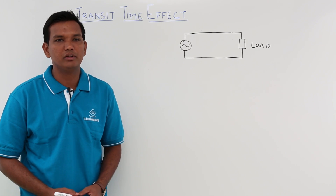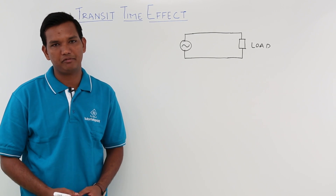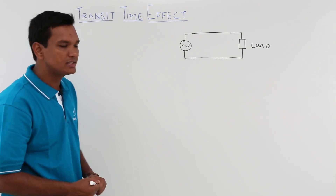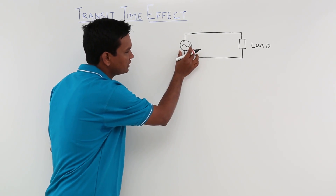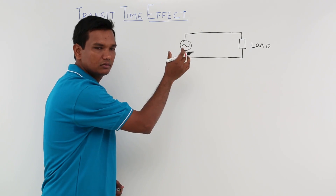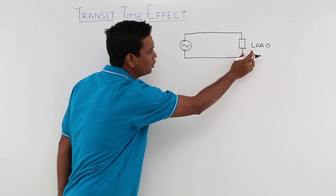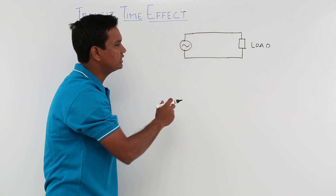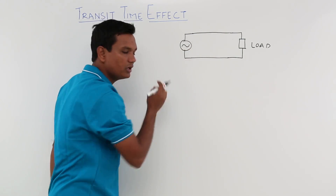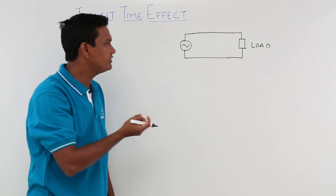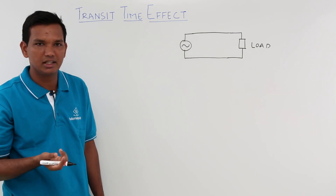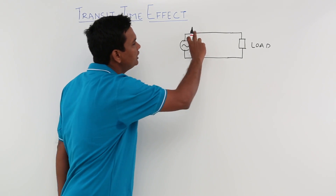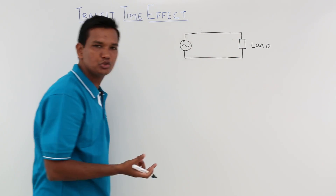In this class, we will discuss the transit time effect. Let us draw a transmission line. As you can see, I have given a sinusoidal or AC signal here, and I have drawn a load connected by a wire — this is nothing but your transmission line. In the previous videos, we understood what a transmission line is: it is the medium over which power is transmitted, and here the medium is these two wires.